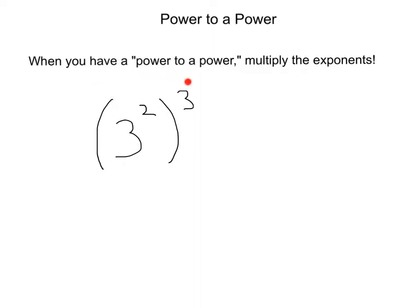Whenever you have a power to a power, you want to multiply the exponents. Let's take this example here to understand why. Here we have 3 squared all to the third power.